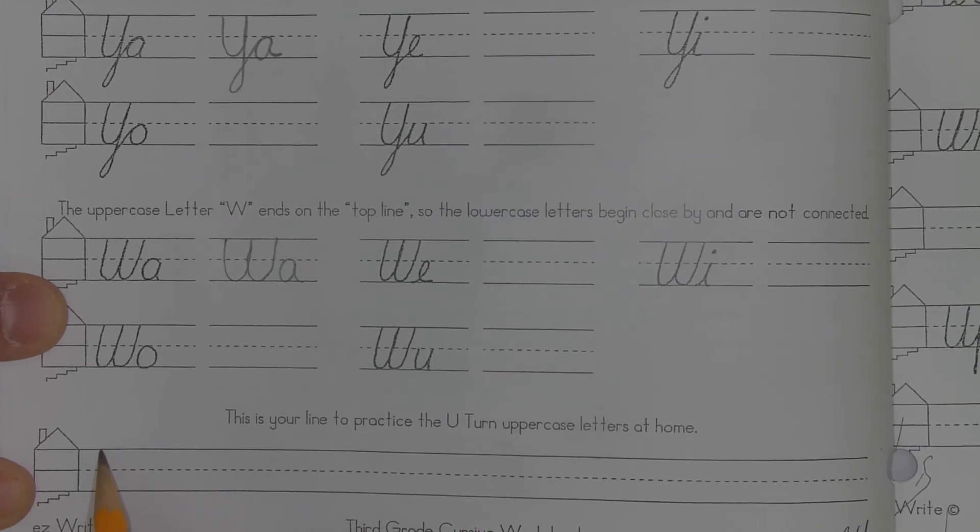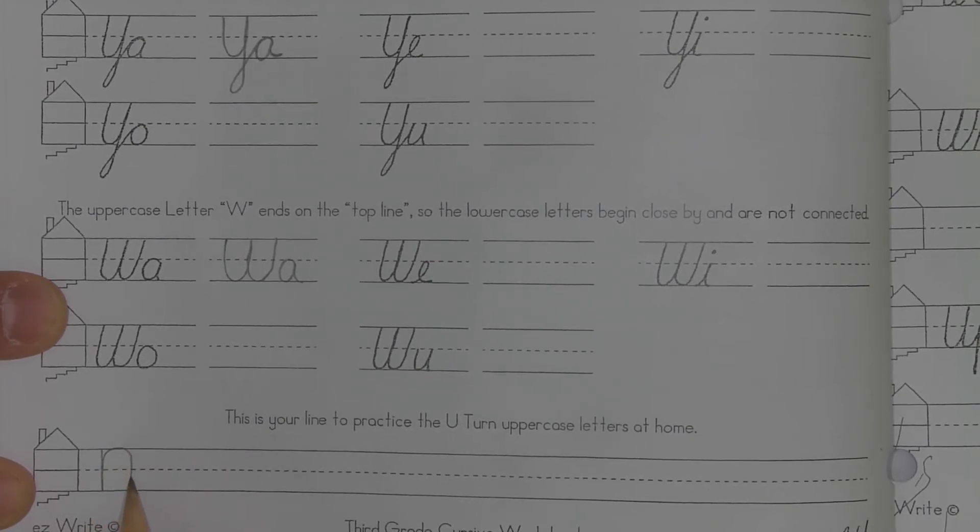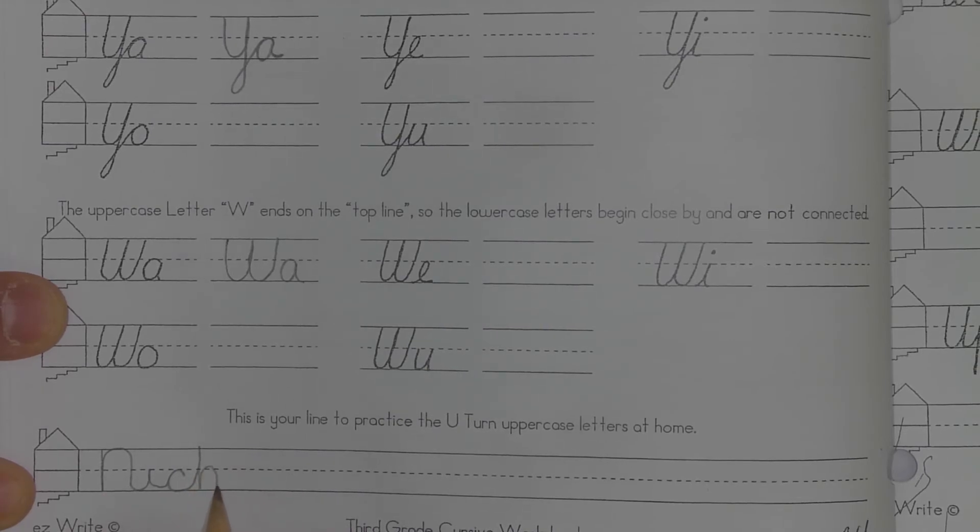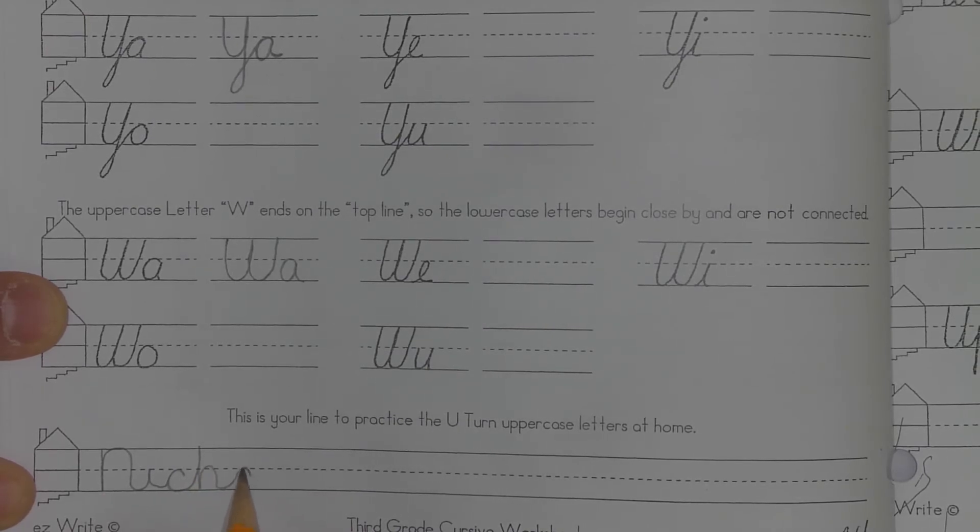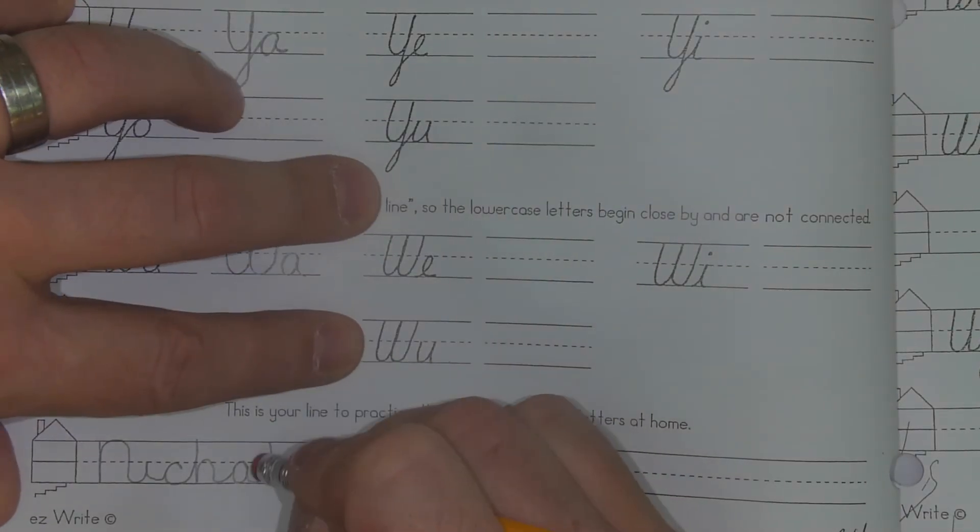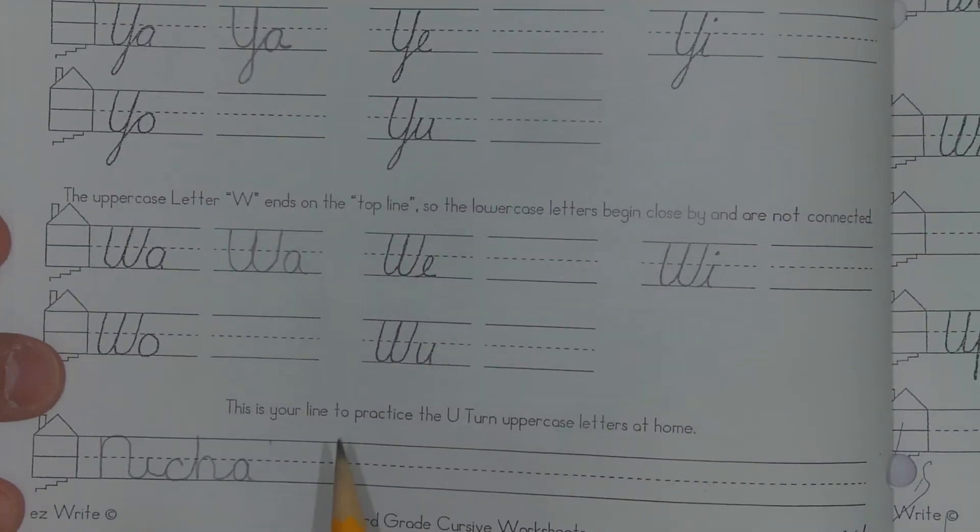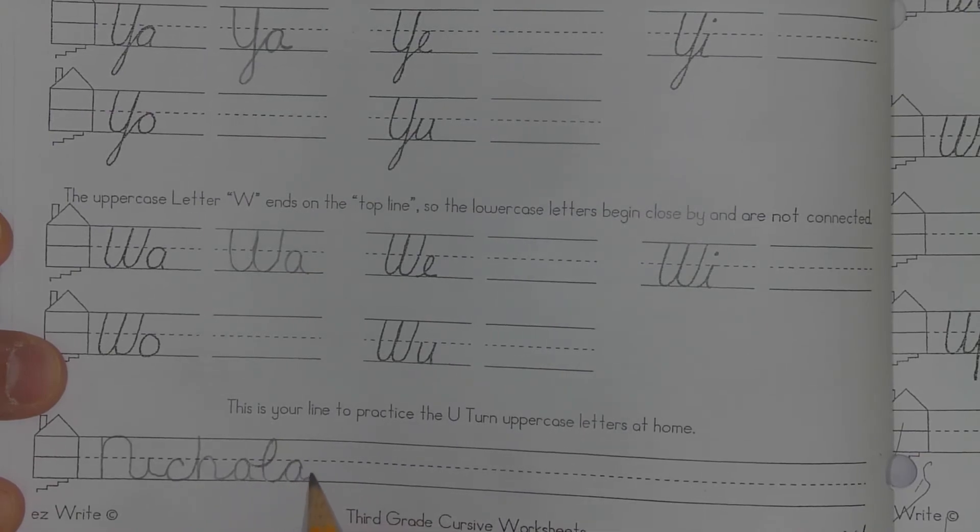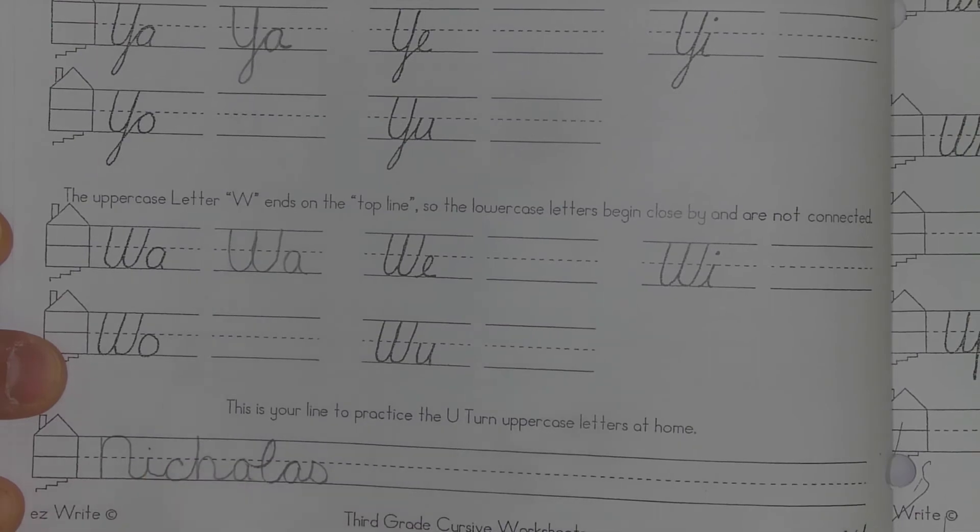See, there's a couple different ways I can do it. But I think in this style of cursive, I would just make my N-I-C-H-O, that's actually an A, Nicholas, O-L-A-S.